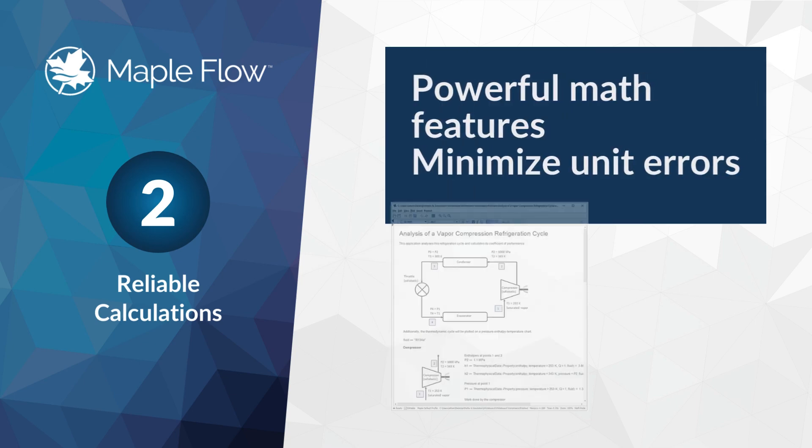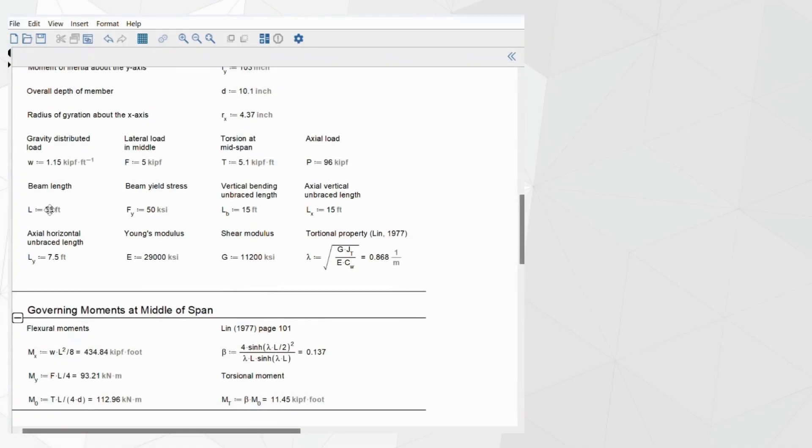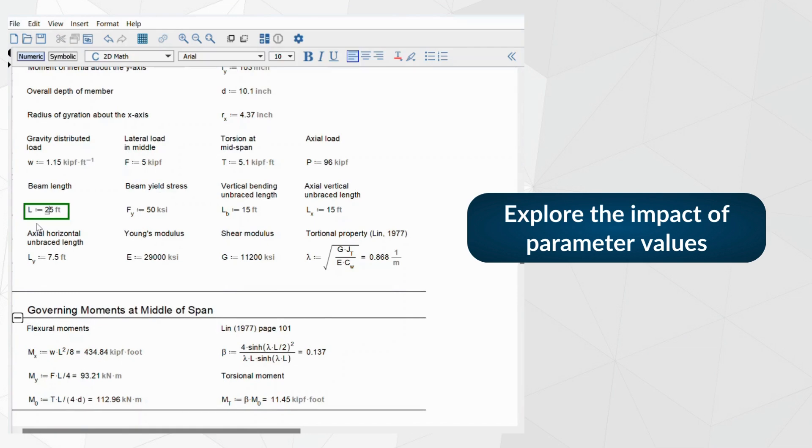Next, MapleFlow is designed to complete engineering calculations reliably and reduce the risk of errors. When a parameter is adjusted, the change cascades through the rest of the document, allowing you to quickly try out values to narrow down a design concept.